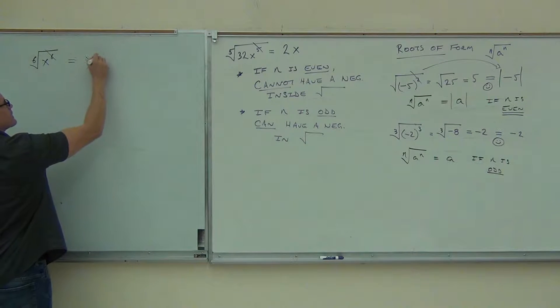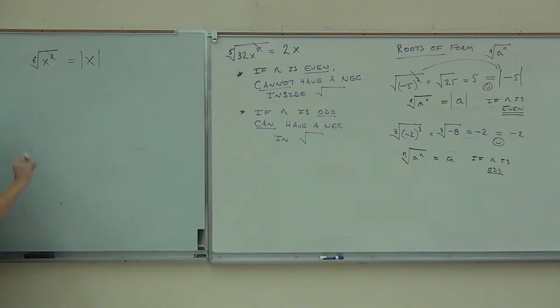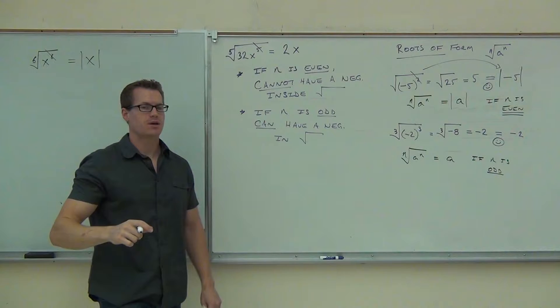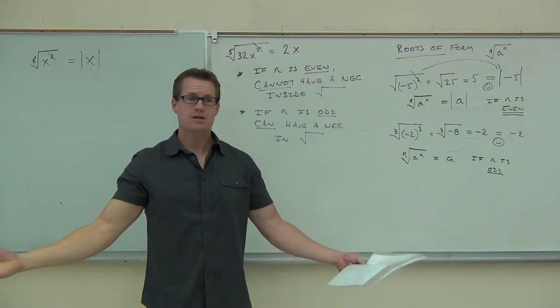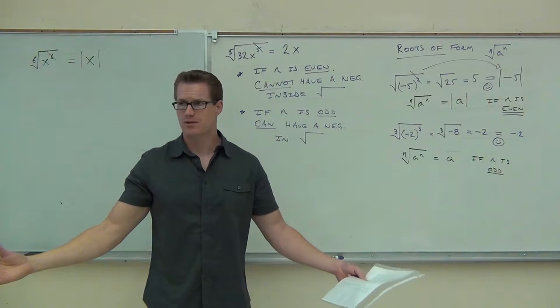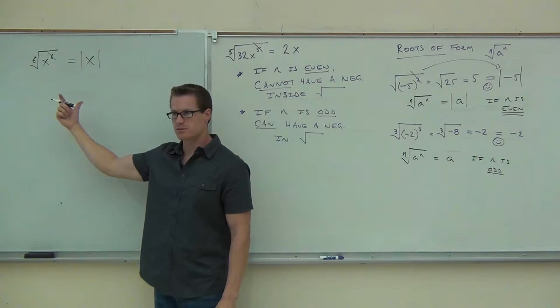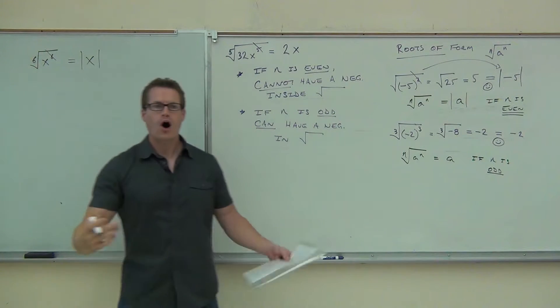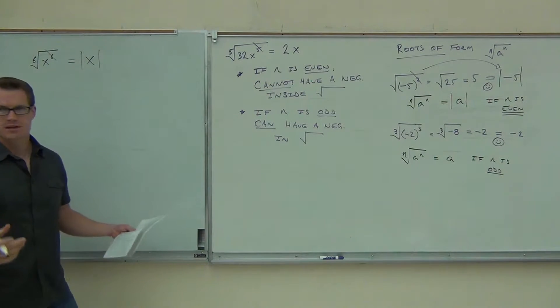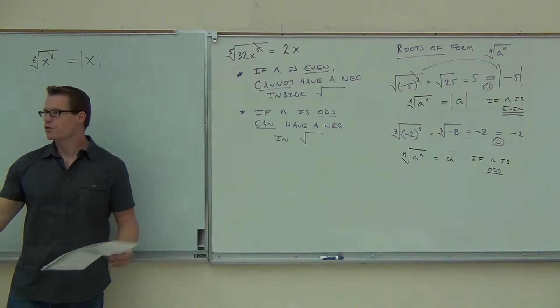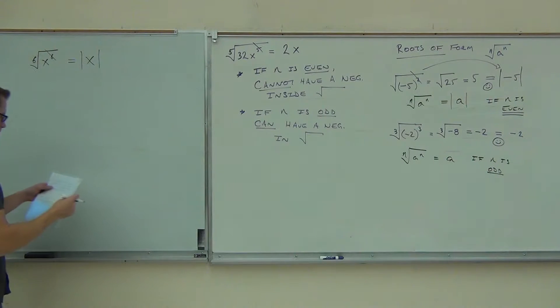What the absolute value means is that when you have an even power, even powers make everything positive. What else makes everything positive? Absolute value. So you cross things out as long as you have the absolute value. That's what even does. Odd doesn't make everything positive. A negative is negative. Therefore, when I have an odd n, it doesn't matter. You're just going to write the n itself.